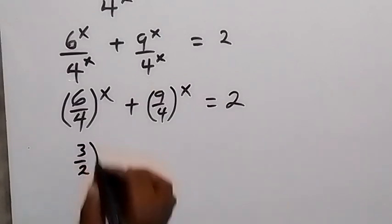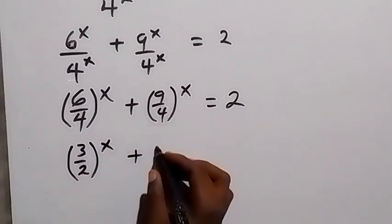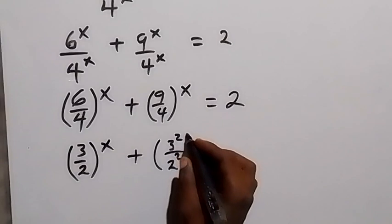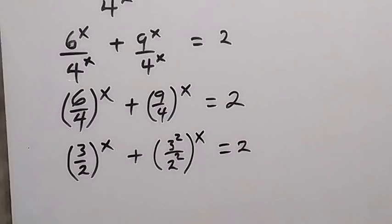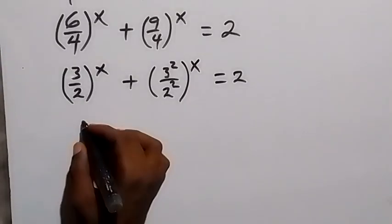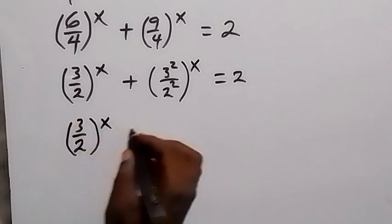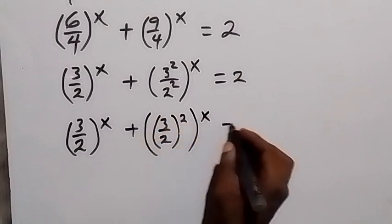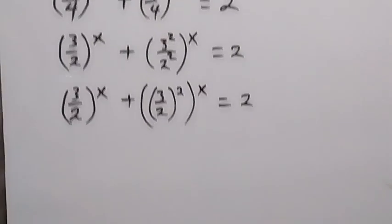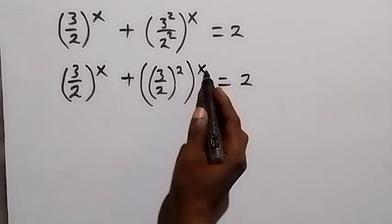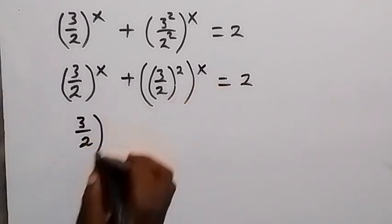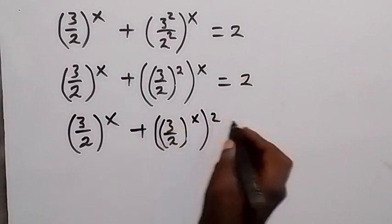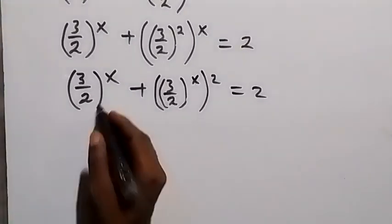In the next step we reduce the numbers in the bracket. So we have 3 over 2 raised to power x. Also, we can express 9 as 3 squared and 4 as 2 squared — that's 3 squared over 2 squared, raised to power x, equals 2. We can bring this power out of the bracket, giving 3 over 2 raised to power x, plus 3 over 2 raised to power x, then raised to power 2, equals 2.